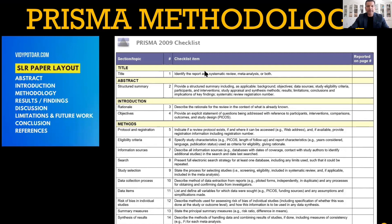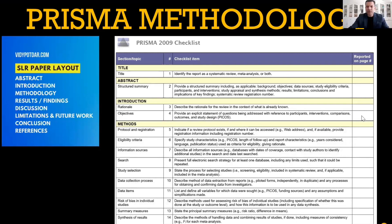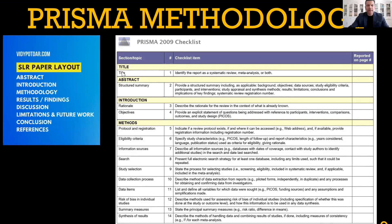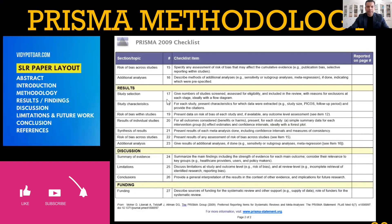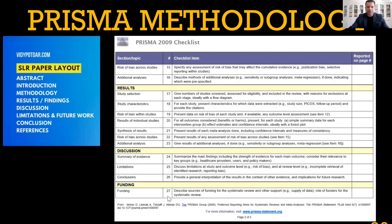For example, the title is on the first page, the abstract is on the first page, rationale could be on the second page, objectives on the second page, and so on. In PRISMA, there are 27 items in total — title, structured abstract, rationale, objectives, protocol and registration, eligibility criteria, and so on, all the way through to item 27.